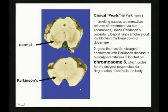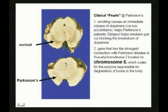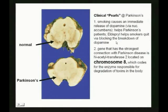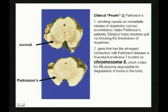Here's a normal substantia nigra — you can see the blackened cells with neuromelanin pigment. In a Parkinson's patient, it's cleared out. An interesting clinical pearl: smoking causes an immediate release of dopamine because the nucleus accumbens gets turned on, and it does help in Parkinson's. Wellbutrin (bupropion) was given to help people quit smoking but also keeps dopamine around longer. As for chromosomal defects in Parkinson's, there have been reports about problems with chromosome 8.